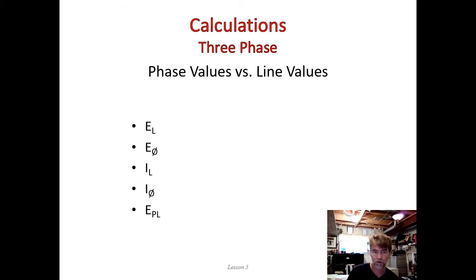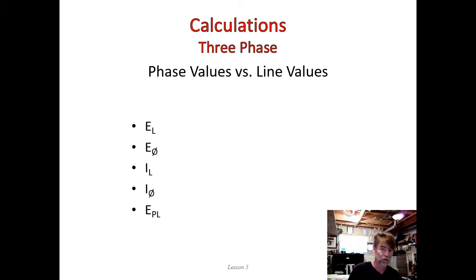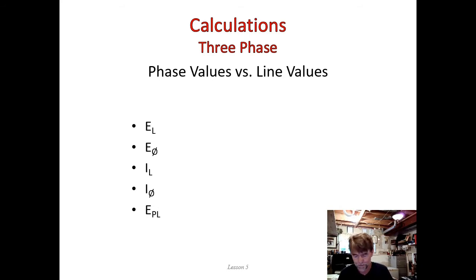I'm going to add one more part to the notation. The final bullet shows E subscript PL, so that is the voltage on the primary line. We've talked about transformers having a primary coil and a secondary coil, and we want to know the voltages on both that primary and secondary coil, or the line.